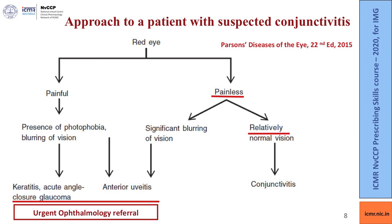Here it is important to remember that not all red eye is due to conjunctivitis. A red eye which is painful with photophobia or blurring of vision could be due to keratitis, acute angle closure glaucoma or anterior uveitis. Such a case should be referred to an eye specialist on an urgent basis. On the other hand, a painless red eye with relatively normal vision could be due to conjunctivitis. In this case, there is usually a feeling of grittiness in the eye and discharge from the eyes.